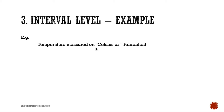So in the interval scale we can now measure the difference between data values, and there is no absolute zero. Another example is test scores: a score of zero does not imply a complete absence of knowledge gained by a student on a topic.